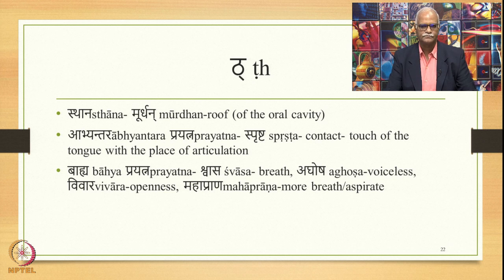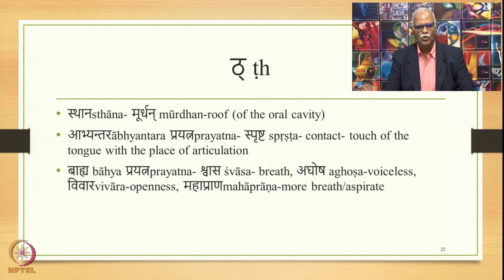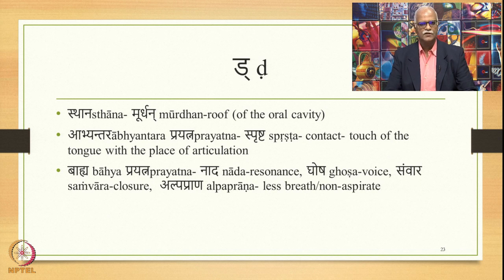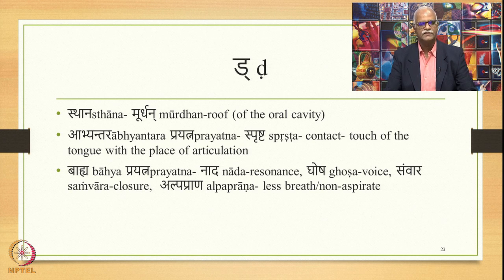Then comes ṭha. The place of articulation is murdhan — roof of the oral cavity. Abhyantara prayatna is sprashta — contact or touch of the tongue with the place of articulation. The bahya prayatna is shvasa, aghosha, and vivara, and also mahaprana — more breath; the sound is called aspirate. Compare ṭa with ṭha. Then comes the sound ḍa. The place of articulation is murdhan. The abhyantara prayatna is sprashta. The bahya prayatna is nada, ghosha, and samvara — resonance, voice, and closure. This is also alpaprana — less breath, non-aspirate.